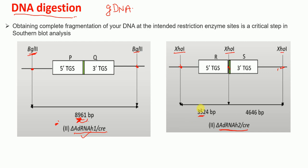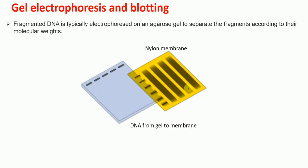After DNA digestion, the next step is to run the fragmented DNA on a gel. In the gel we will see multiple fragments, because our restriction enzymes cut at multiple locations in the genomic DNA. Afterwards, we transfer the DNA from the gel to the membrane — in this case a nylon membrane — and that process is called blotting.